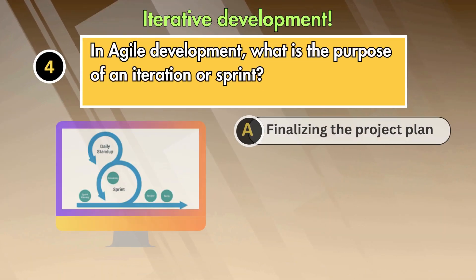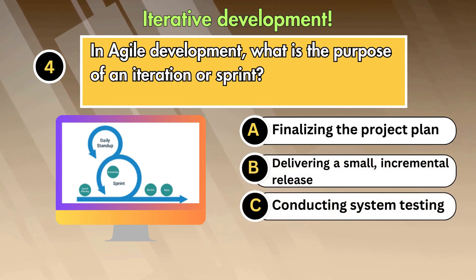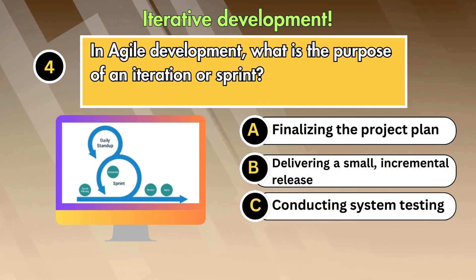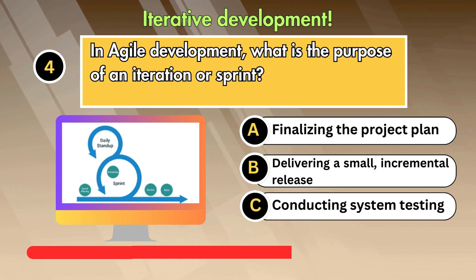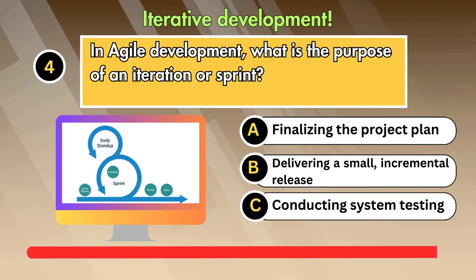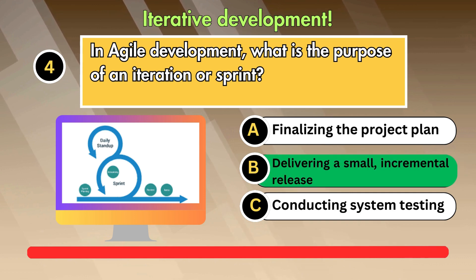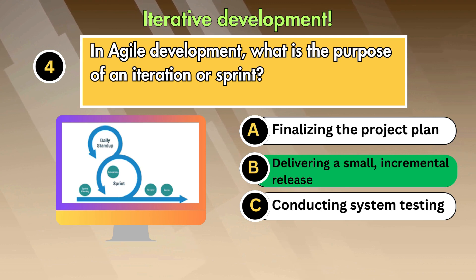Question 4: In Agile development, what is the purpose of an iteration or sprint? Option 1: Finalizing the project plan. Option 2: Delivering a small, incremental release. Option 3: Conducting system testing. Answer is: Delivering a small, incremental release.